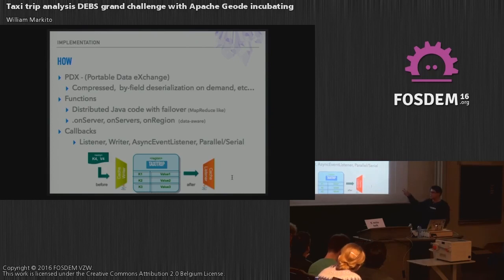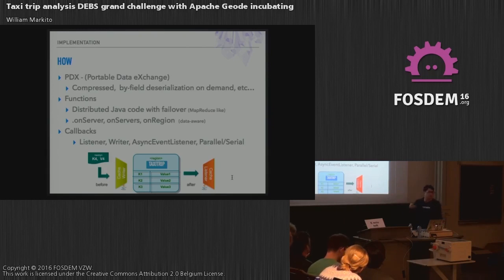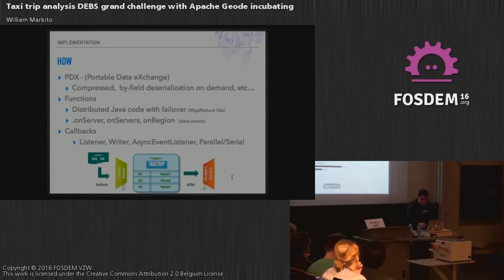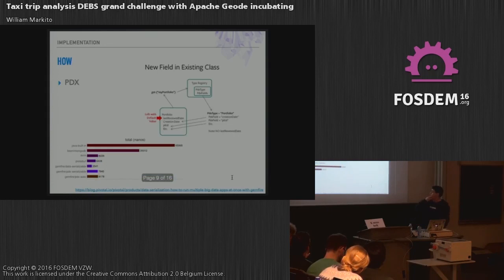And then we have a bunch of different callbacks, which you can use to intercept data and do something with it — for example an async event listener, which is our way to batch and work on some windows of time to deal with data and do some processing, which can be parallel or serial depending on your needs.